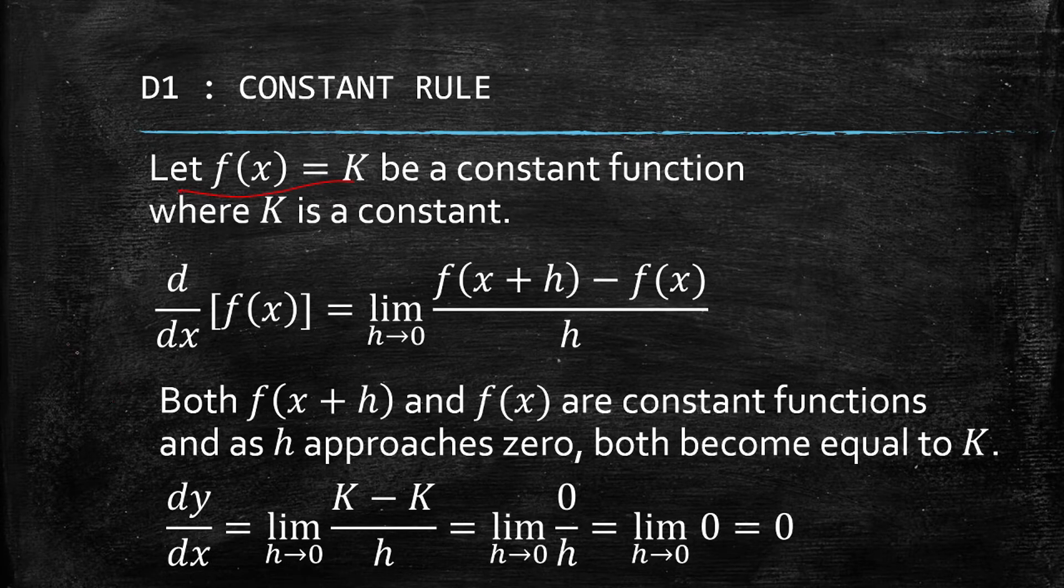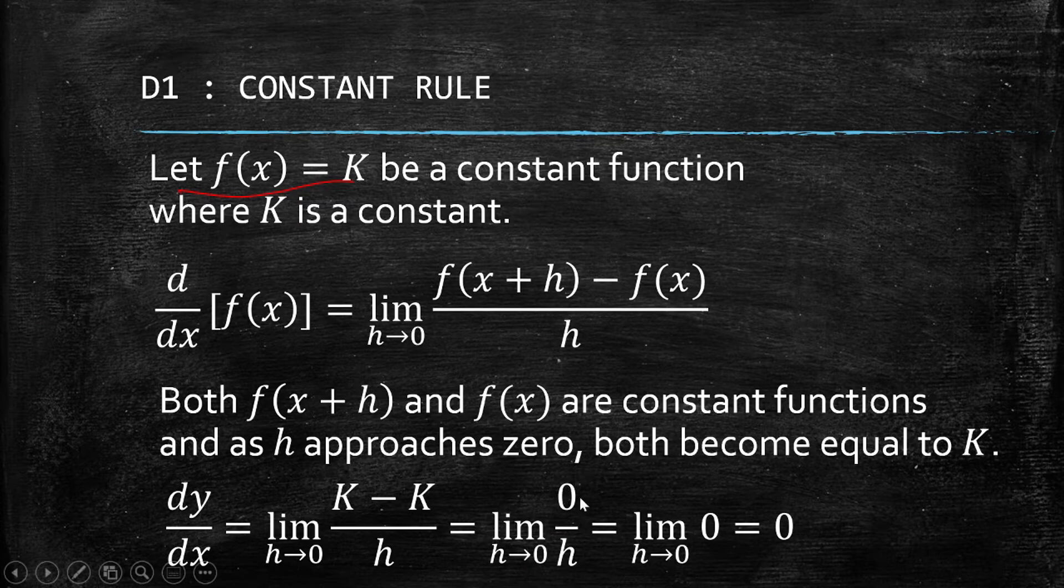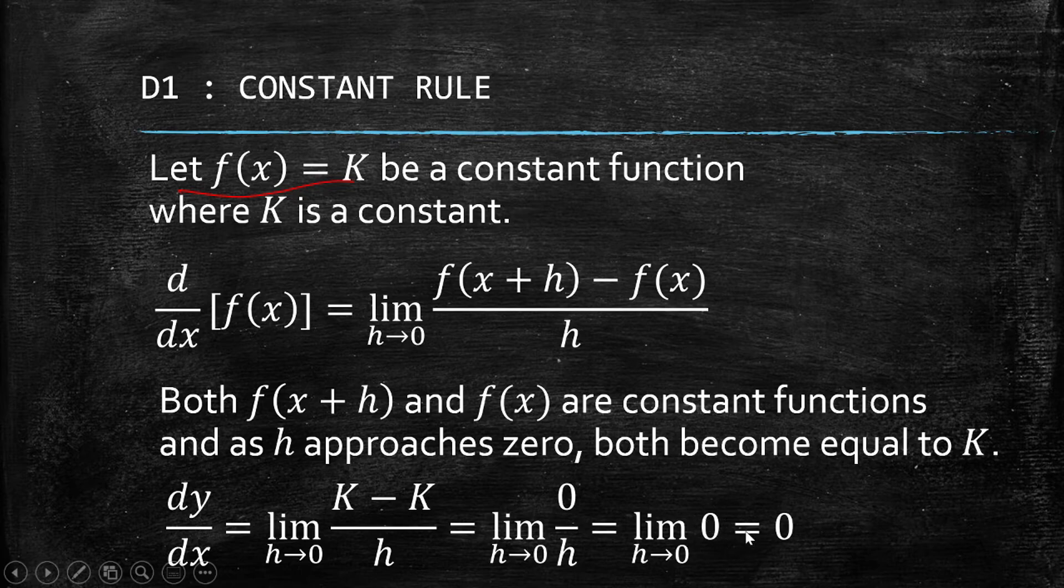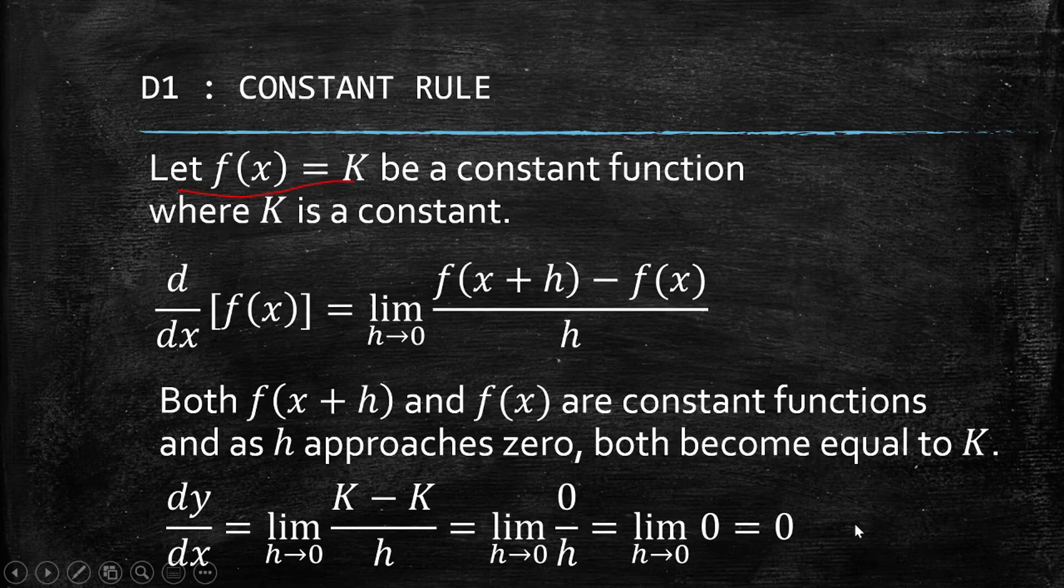K minus K is zero, so we will have zero over h, and zero over h is actually zero. Of course, the limit of a constant is just the constant itself, so the limit of zero is just zero.